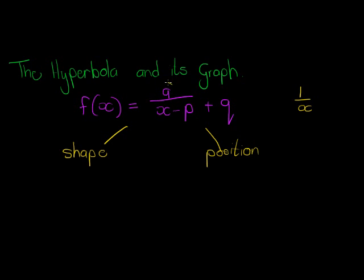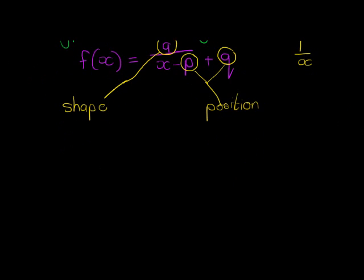This value determines the shape, and these two values determine the position. So how does it determine? Well, first of all we get two kinds of shapes. If a is a positive number, then our basic shape would look like this.